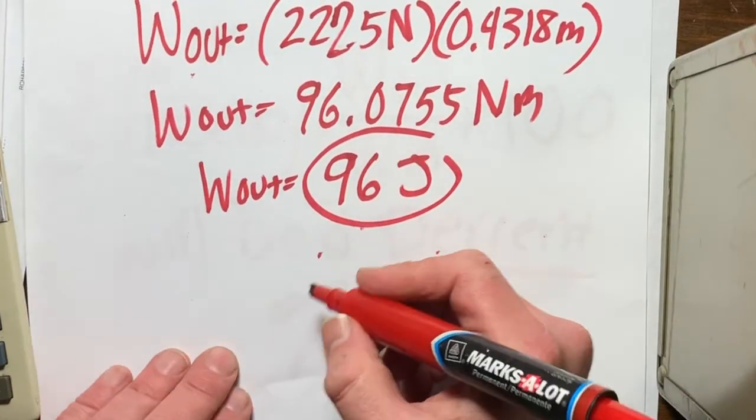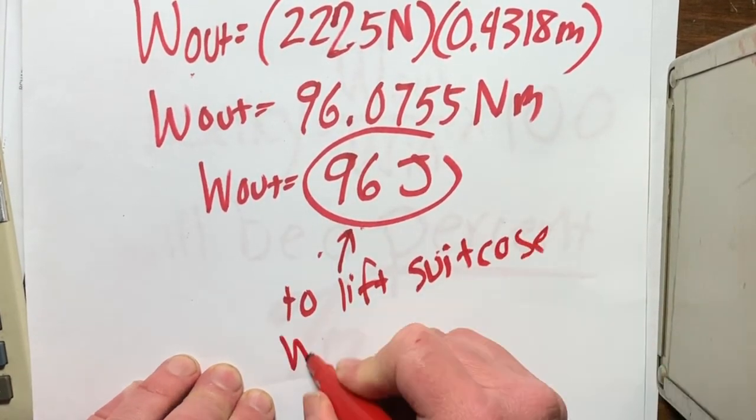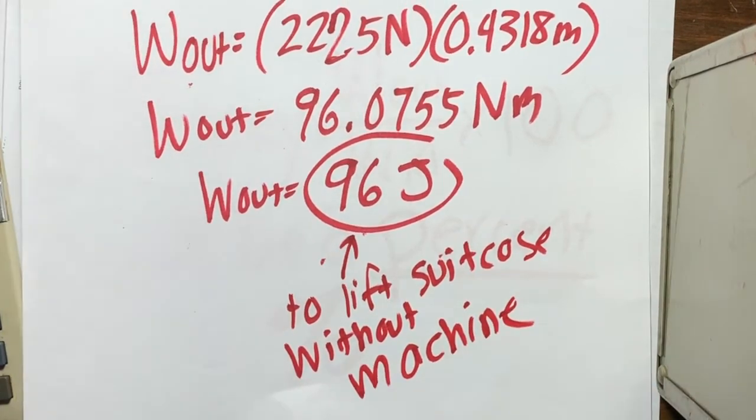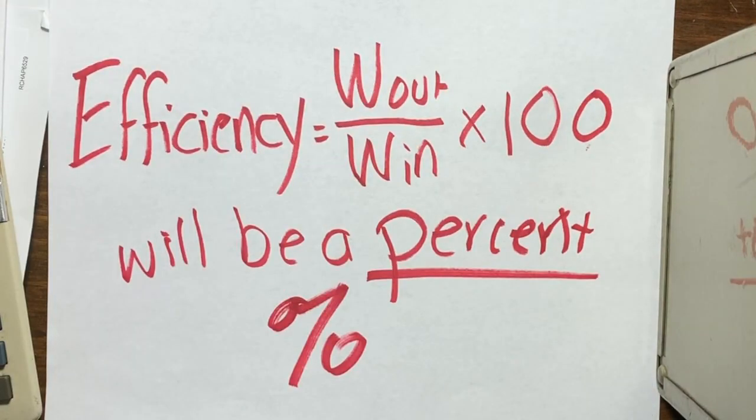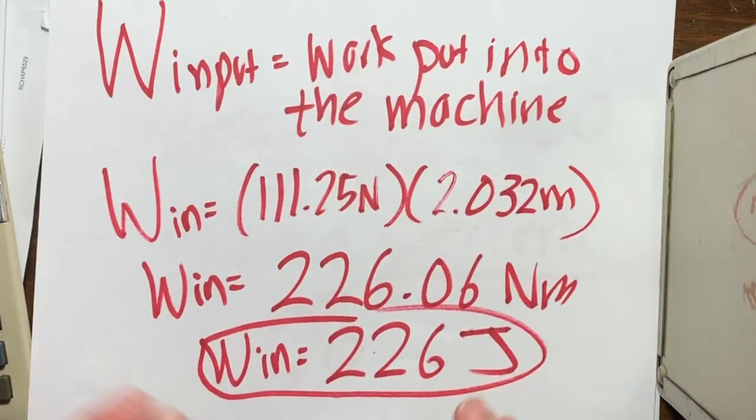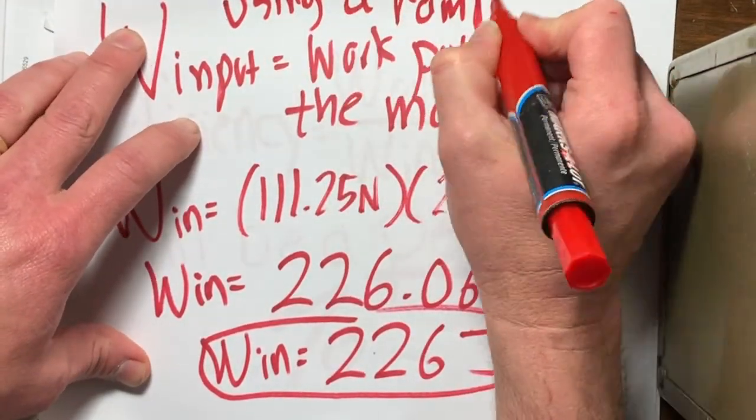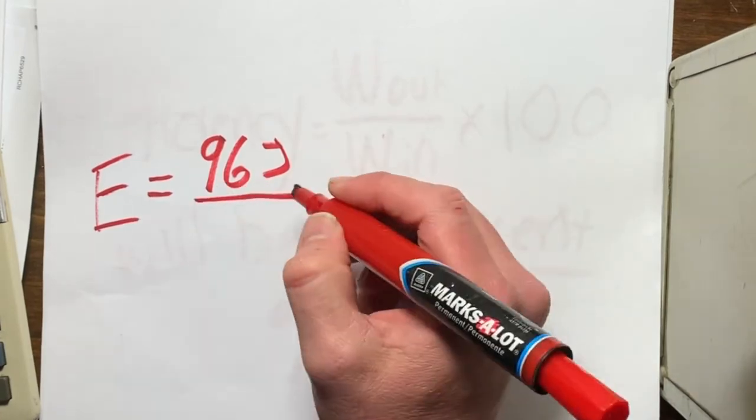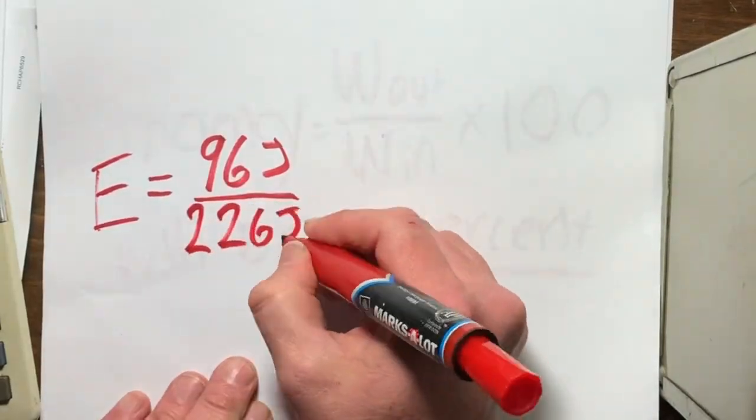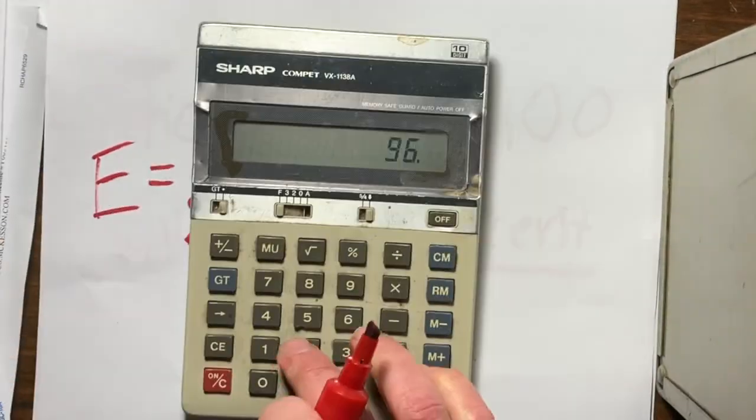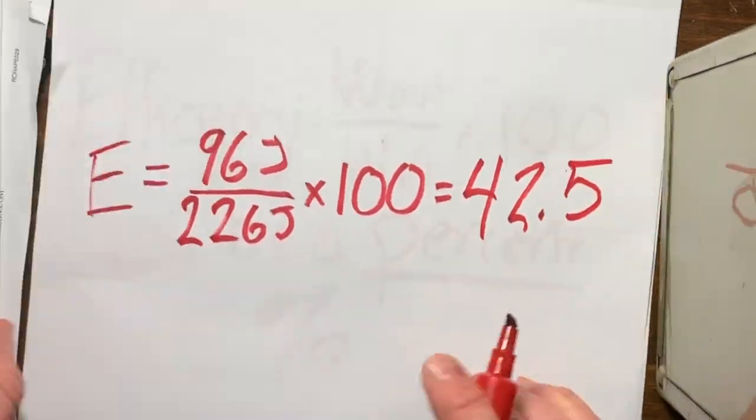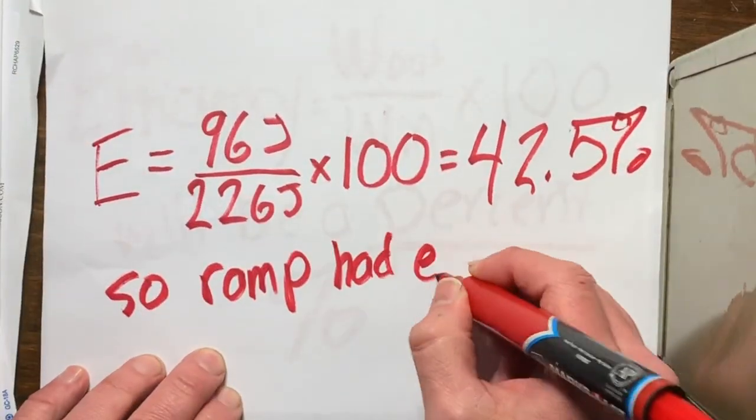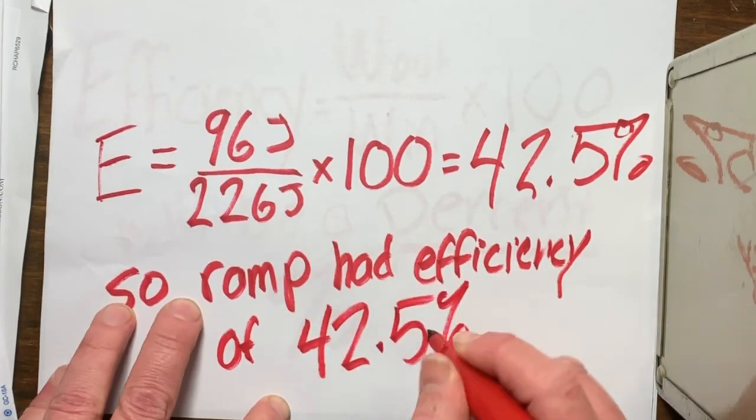So let's go over the efficiency of my two machines. Both did 96 joules of work output. So in both machines, incline plane and the pulley, the work out is 96 joules. And the incline plane, the work in was 226 joules. So if I want to calculate, I take 96 divided by the 226 times 100, and I would get my efficiency to be only 42.5, or about 43% efficiency.